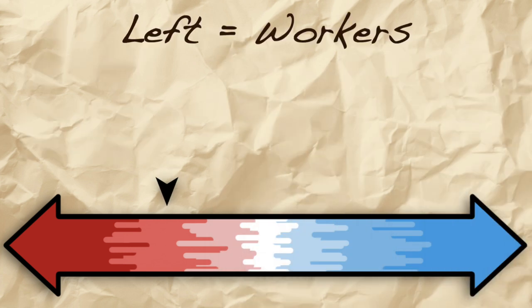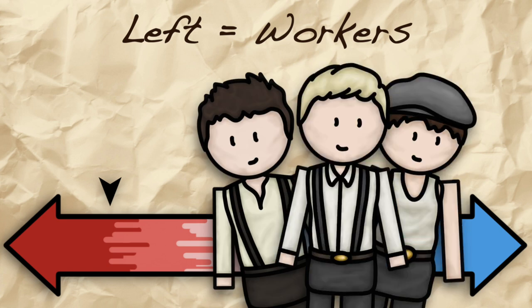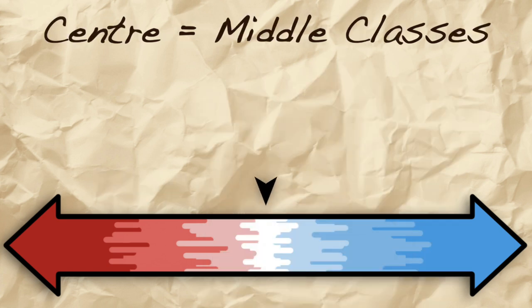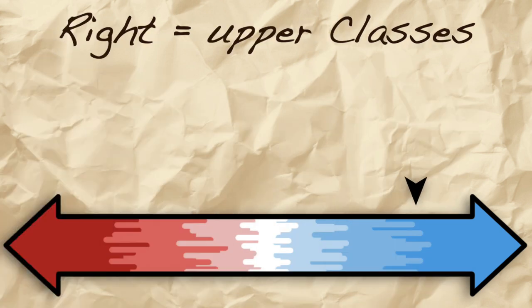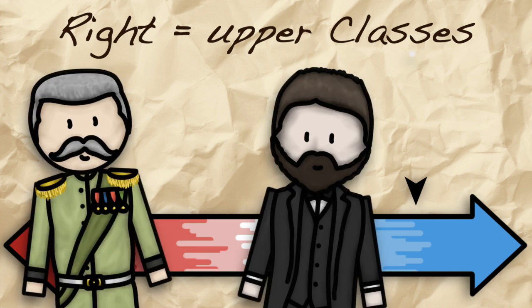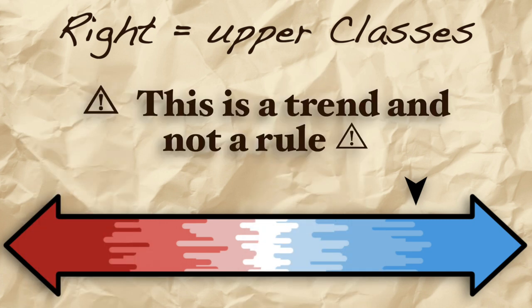Left-wing parties tend to be supported more by workers, centre parties by the middle classes, and right-wing parties by upper classes, as a general trend, although this is certainly not a hard and fast rule.